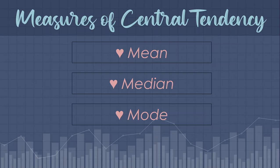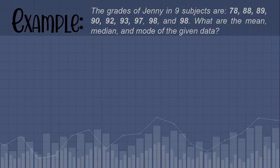In this topic we will be discussing how to compute the mean, median, and mode of ungrouped data. For example, the grades of Jenny in nine subjects are 78, 88, 89, 90, 92, 93, 97, 98, and 98.